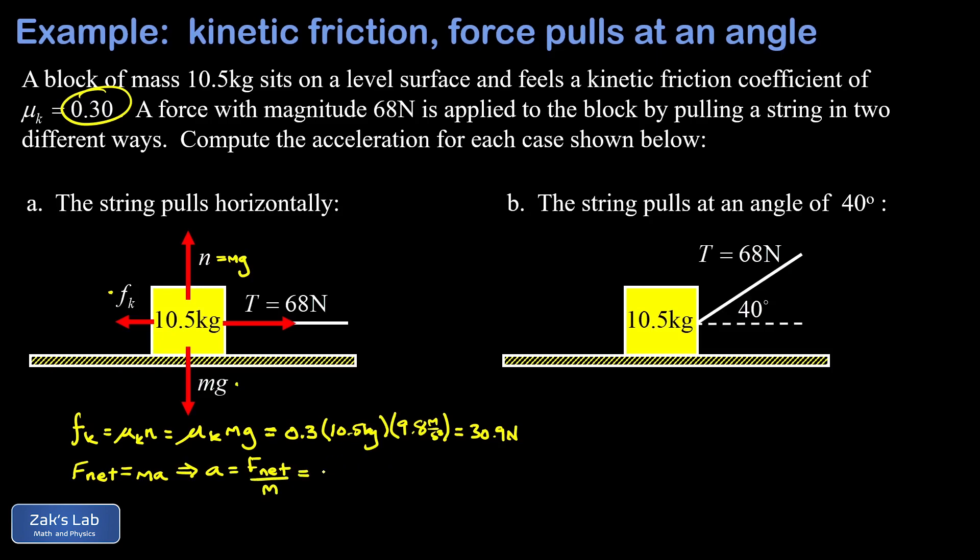Our net force here, we're going to use the standard coordinate system where rightward is positive. I have 68 newtons pulling to the right, that's our tension in the rope. I have 30.9 newtons pushing to the left, that's our kinetic friction force. The mass of the block was 10.5 kilograms, and we arrive at an acceleration of about 3.53 meters per second squared.